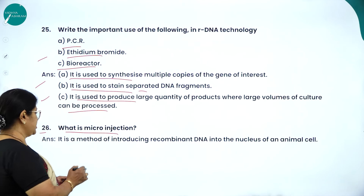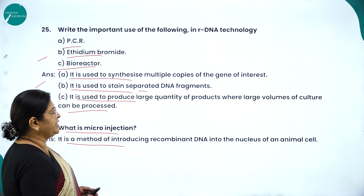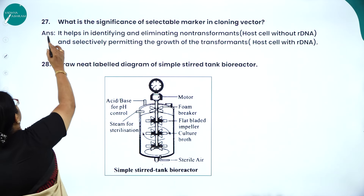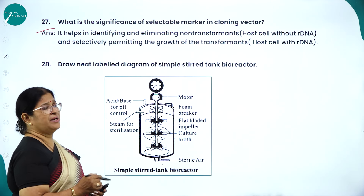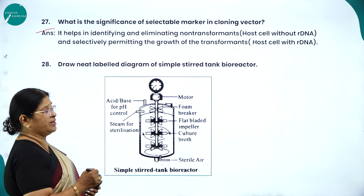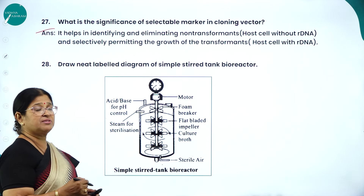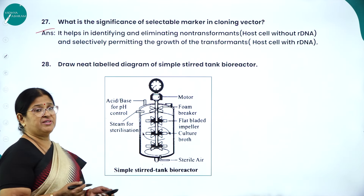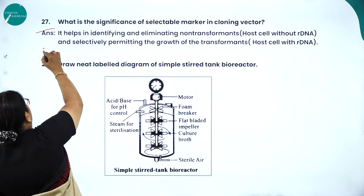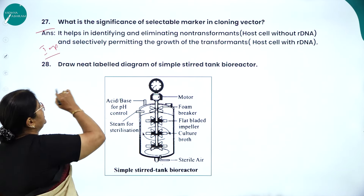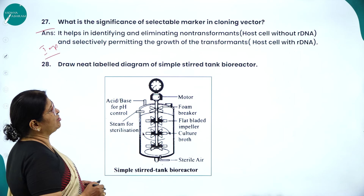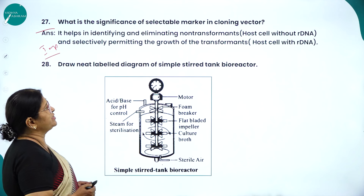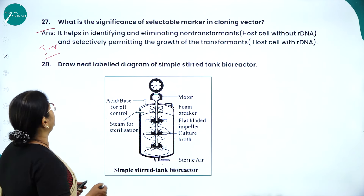Microinjection is a method of introducing recombinant DNA into the nucleus of an animal cell. The significance of selectable markers in cloning vectors: they help in identifying and eliminating non-transformants (host cells without R-DNA) and selectively permitting the growth of transformants (host cells with R-DNA).